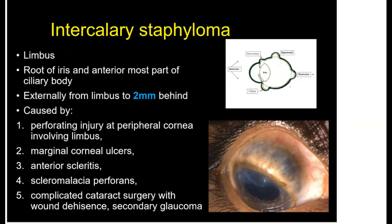The second type is intercalary Staphyloma. This occurs at the limbus and can extend up to 2 mm behind the limbus. In intercalary Staphyloma, the root of the iris and the anterior most part of the ciliary body can be incarcerated. So if the MCQ asks which Staphyloma involves protrusion of the root of the iris, the answer is intercalary Staphyloma — as opposed to anterior Staphyloma where it was the body of the iris.